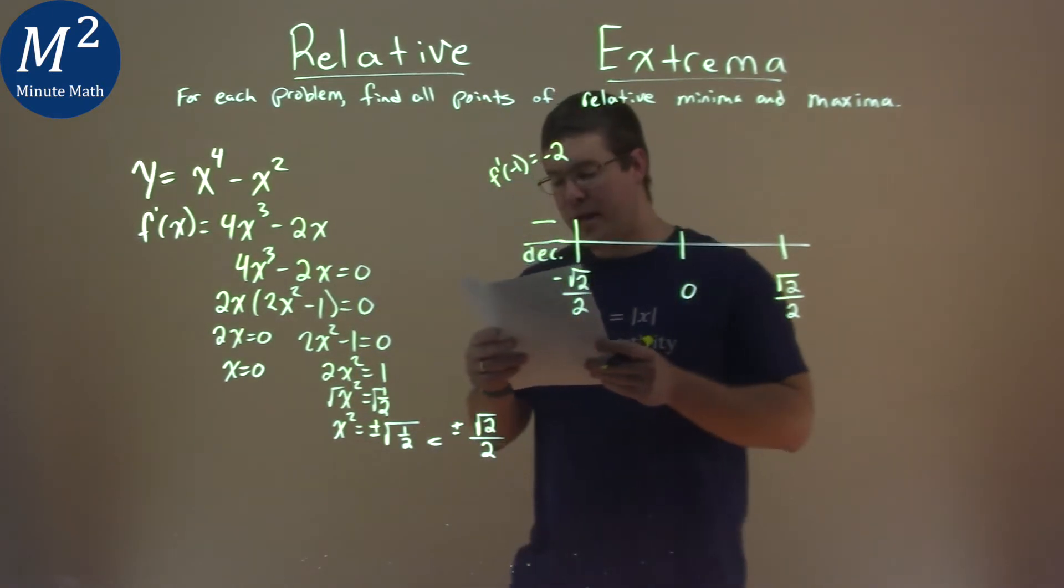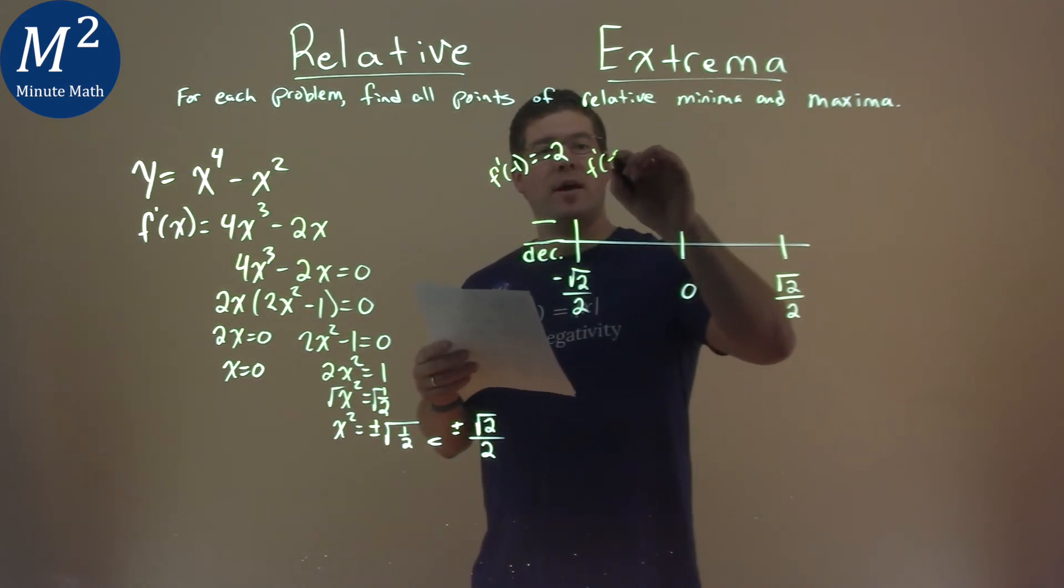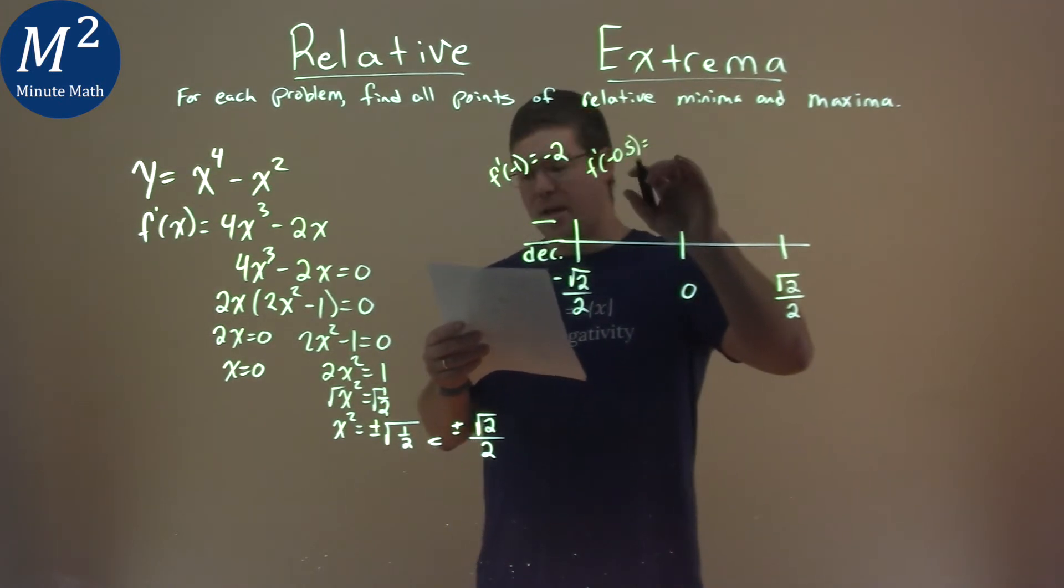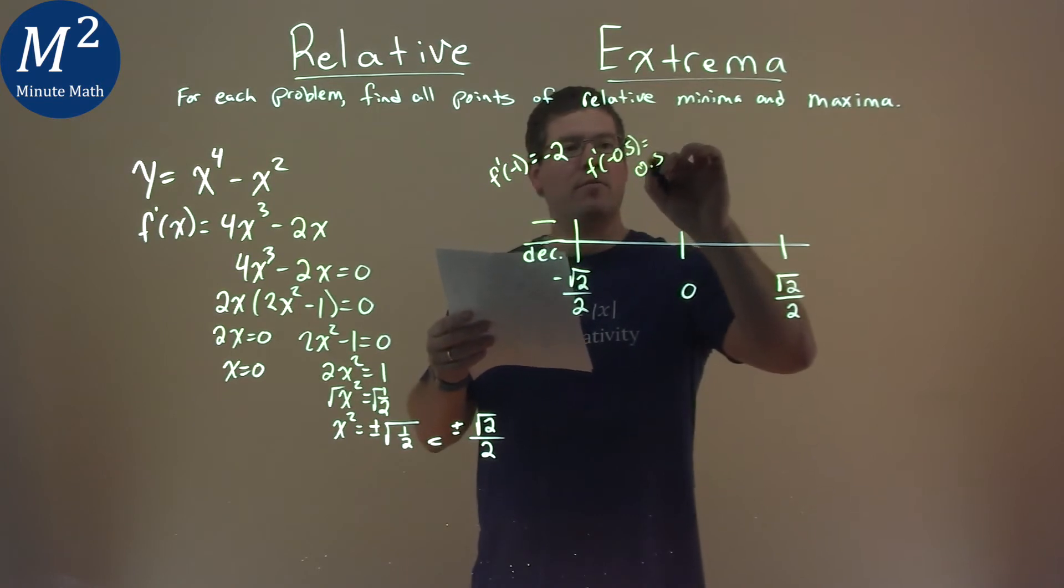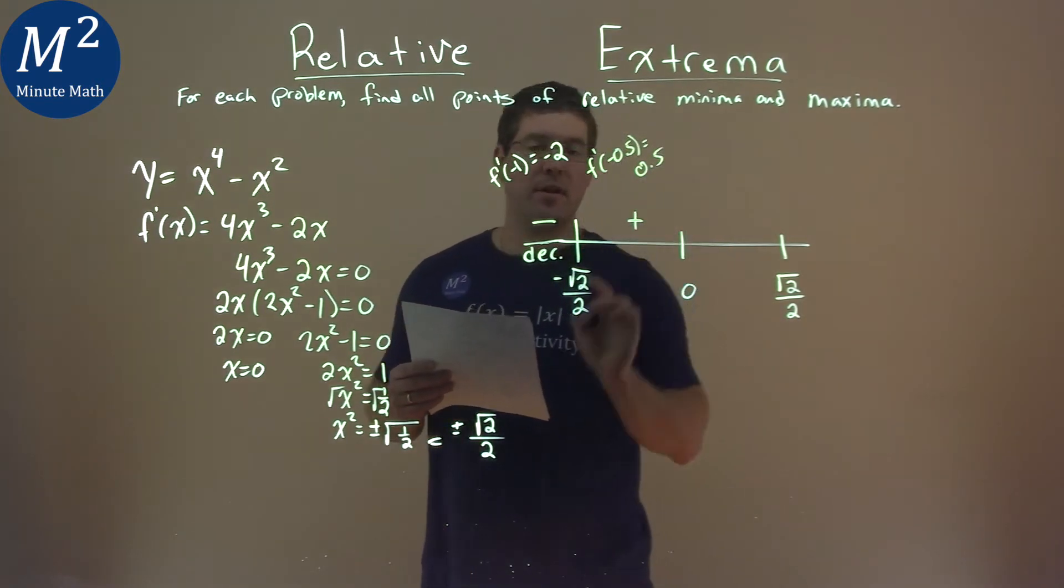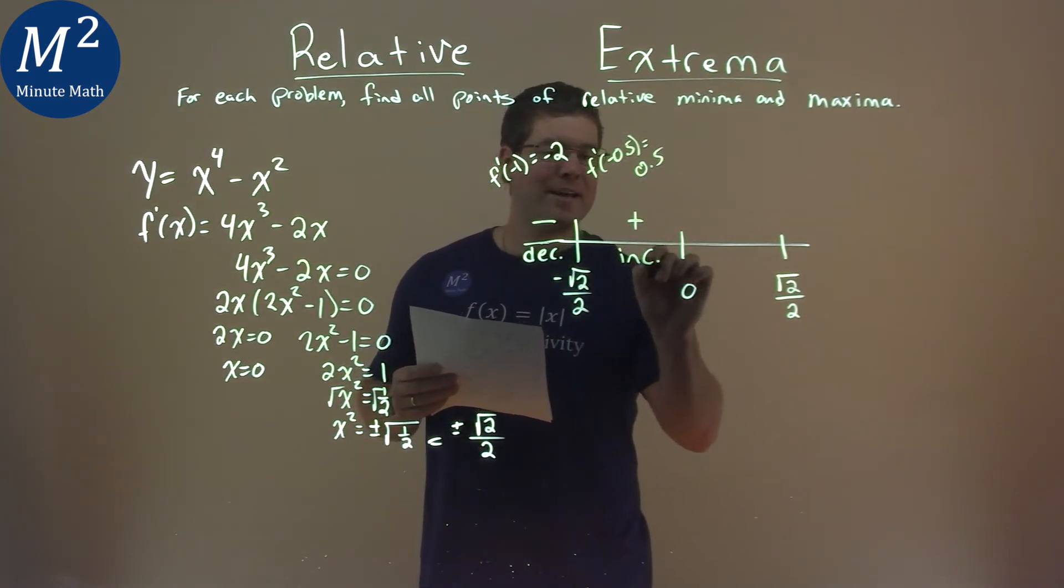Between negative square root 2 over 2 and 0, I picked the value of negative 1 half. So I found f prime of negative 0.5, and that came out to be positive 0.5. It's positive, that's what I care about, and we're increasing there.